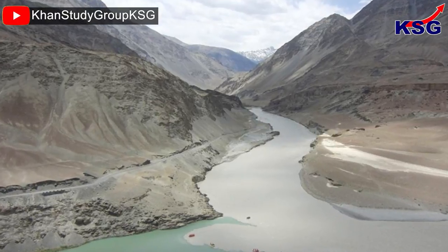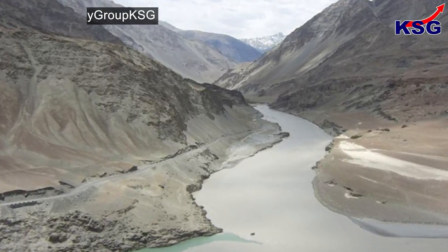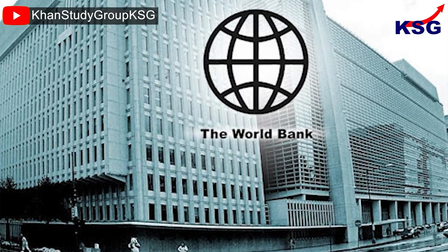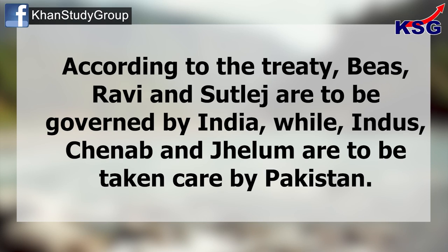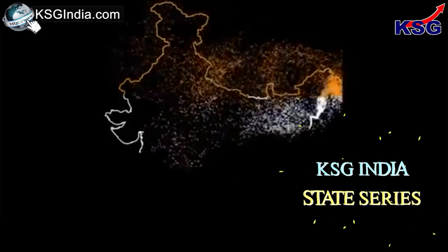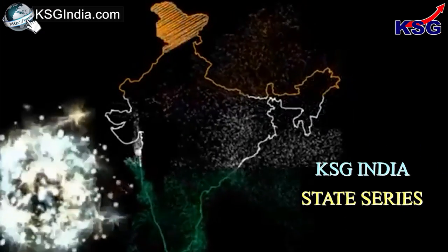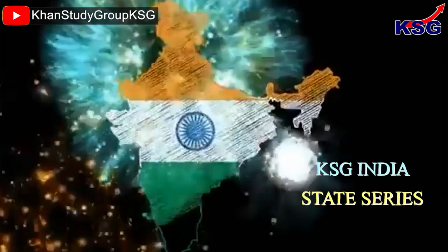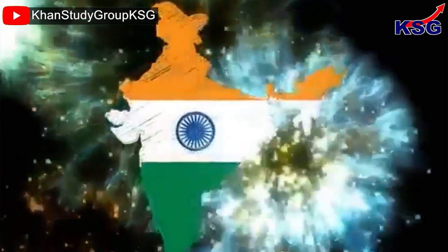Finally, let us tell you about the Indus Water Treaty. The Indus Water Treaty was signed on 19th September 1960 by then Prime Minister Jawaharlal Nehru and Pakistan's President Ayub Khan. It was brokered by the World Bank. According to the Treaty, Beas, Ravi and Sutlej are to be governed by India, while Indus, Chenab and Jhelum are to be taken care of by Pakistan. That's it in this edition of the KSG State Series. Hope you liked this video — stay tuned to our channel for more such informative videos on the various states and union territories of India.